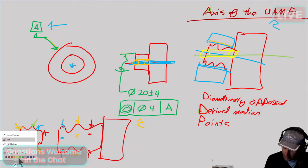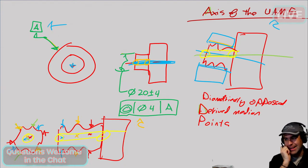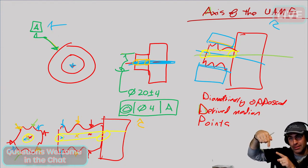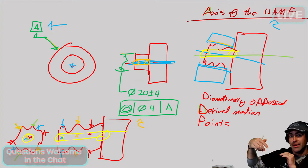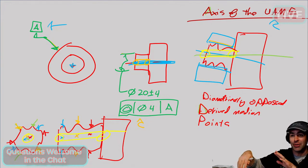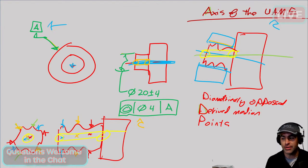Textbooks show two dial indicators that are opposed, though I've never seen anybody actually do that in real life. A CMM can handle this easily — you put it on a CMM, tell it to measure, it gets points and does all the math. What's concentricity useful for? It controls the distribution of mass. Whereas runout does the same thing but is more restrictive.